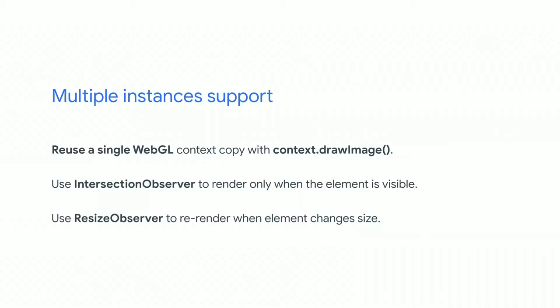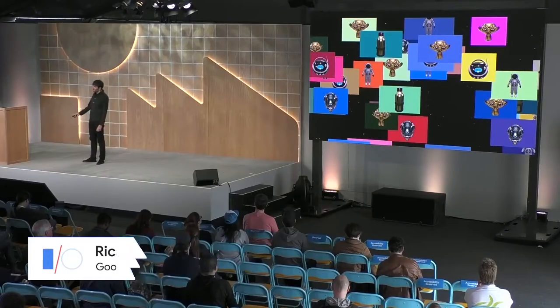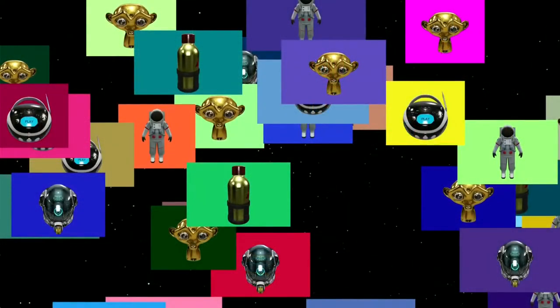The best solution we found was creating a single WebGL context off-screen and using it to render all the Model Viewer elements on the page. We also utilize the Intersection Observer to make sure we're not rendering objects that aren't in view, and the Resize Observer to re-render when the developer modifies the size. We don't know how the web works — sooner or later someone will want to display hundreds of those components at once, and for that we'll need to make sure the underlying APIs are as efficient as possible.